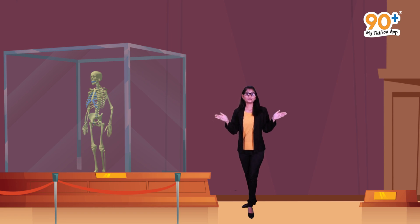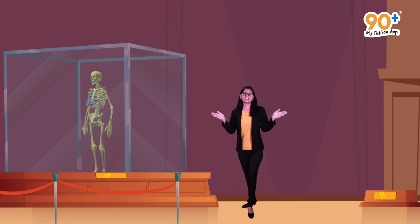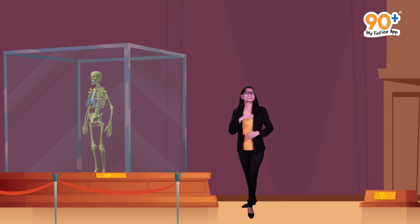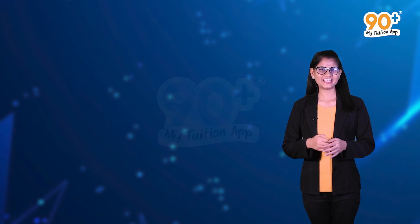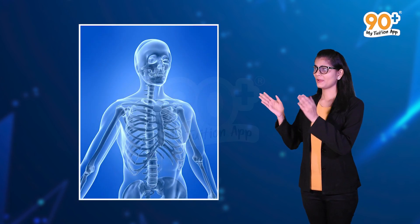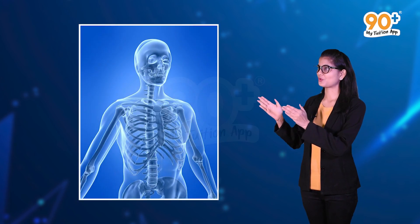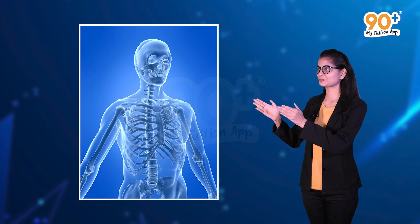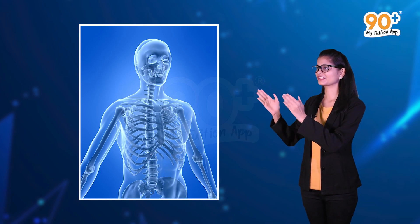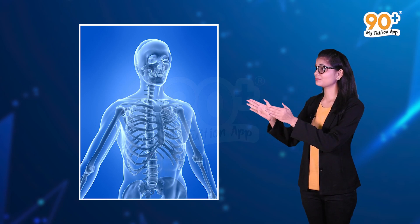It also provides locomotion and movement. So now we will be discussing more about these movements in our next section, that is, the skeletal system. A human body is made up of a number of bones, and together these bones form a framework that gives shape to our body.